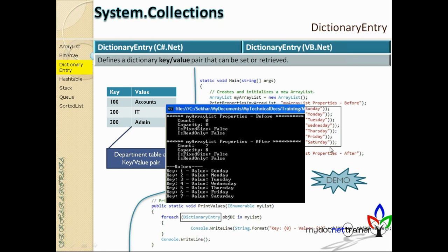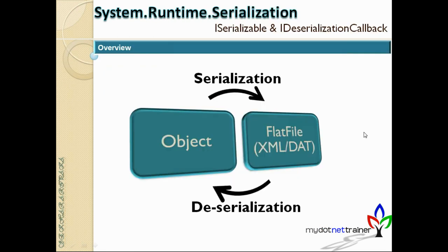Before the next topic, there is an important subtopic: serialization and deserialization. This is one of the very key important concepts in programming — not specific to .NET, it's a general topic. When we serialize an object, we can persist that object from memory to a flat file. A flat file means any physical file on your disk — a .txt file, XML file, CSV, or PPT.